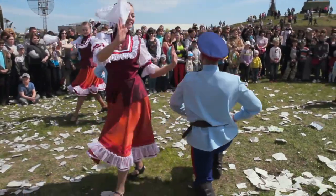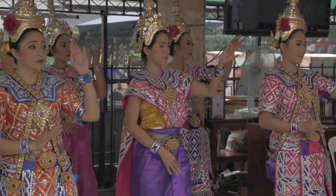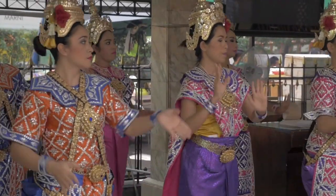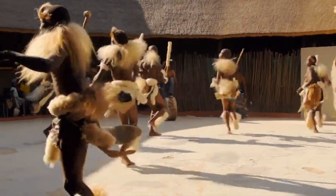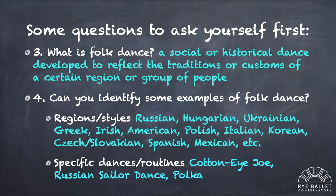Now let's do the same with folk dance — probably a lesser known genre of dance. Folk dance can be defined as a social or historical dance developed to reflect the traditions or customs of a certain region or group of people. Like ballet, folk dance also comes in the form of many styles from many different regions of the world, including but not limited to Russian, Hungarian, Ukrainian, Greek, Irish, American, Polish, Italian, Korean, Czechoslovakian, Spanish, and Mexican.